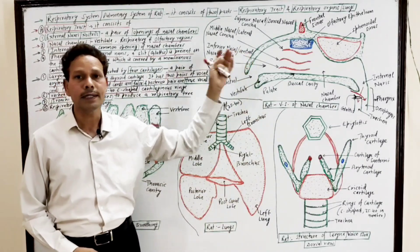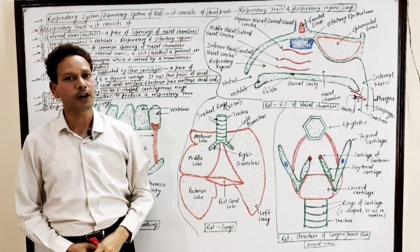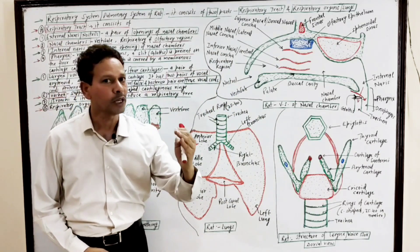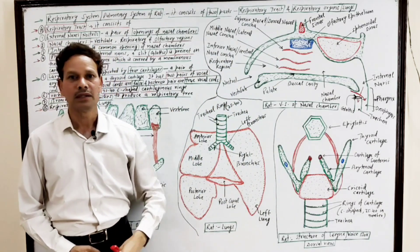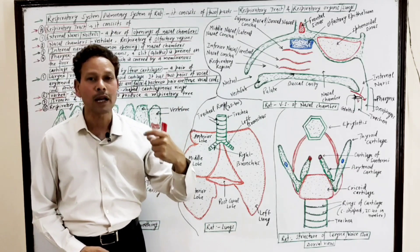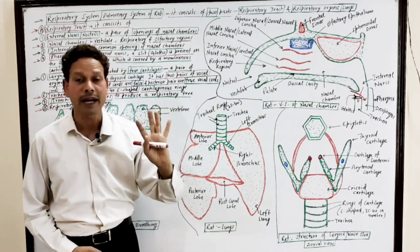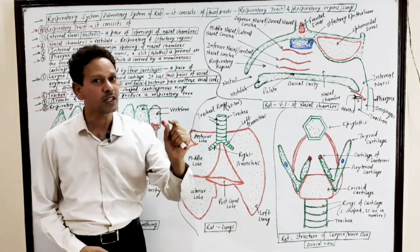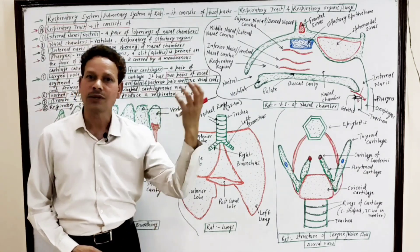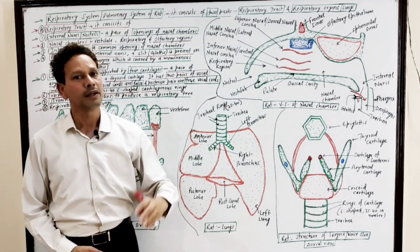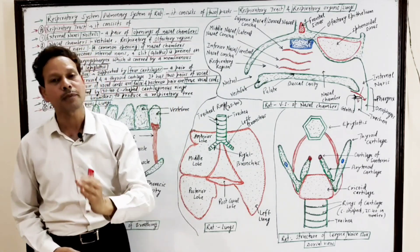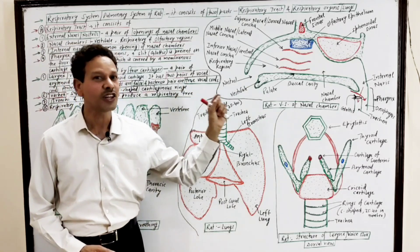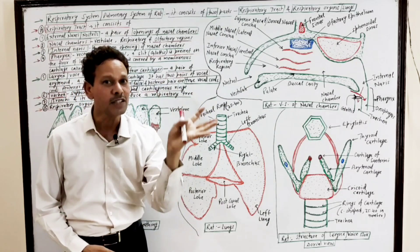Dear students, in today's lecture I will discuss the respiratory system, the pulmonary system of rat, Ratus ratus, common house rat. The respiratory system of rat is divided into two parts: respiratory tract and respiratory organs or lungs. As well as in this lecture, I will explain the mechanism of breathing.